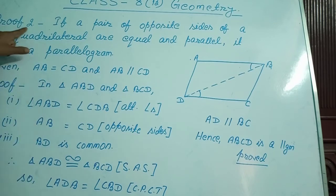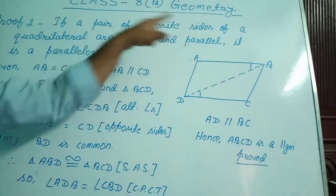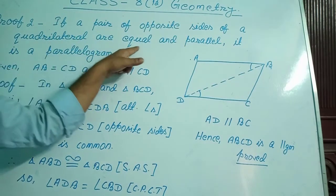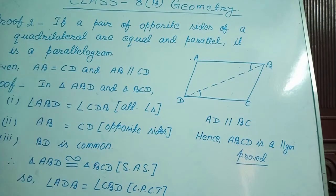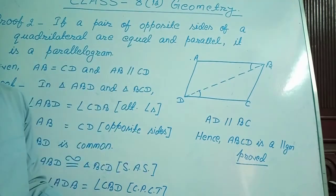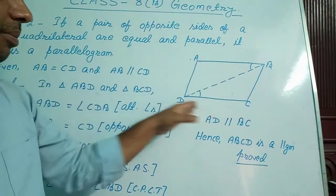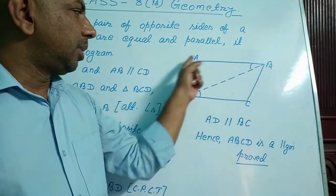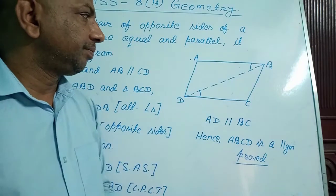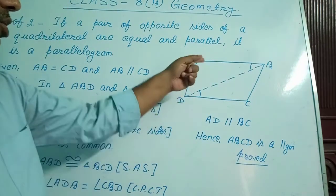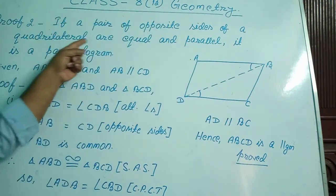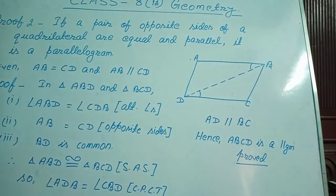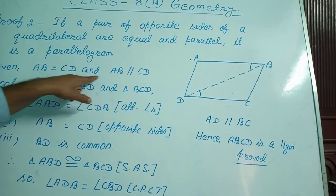The statement of proof 2 is: if a pair of opposite sides of a quadrilateral are equal and parallel, it is a parallelogram. For that I have considered parallelogram ABCD, in which a pair of opposite sides AB and CD are used. It is given that these are equal and parallel, so in the given information I wrote AB equal to CD and AB parallel to CD.